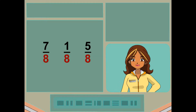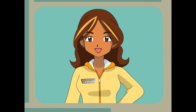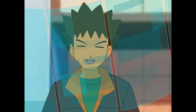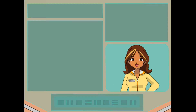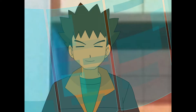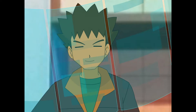Right. If the denominators are the same, the larger the numerator, the larger the fraction. But in your case, we have to try something different. We have to find the least common denominator. Three is the least denominator. Well, hang on. You're right that least means lowest or smallest, but common is something that is shared. So it sounds like we have to find the lowest denominator shared between the fractions.